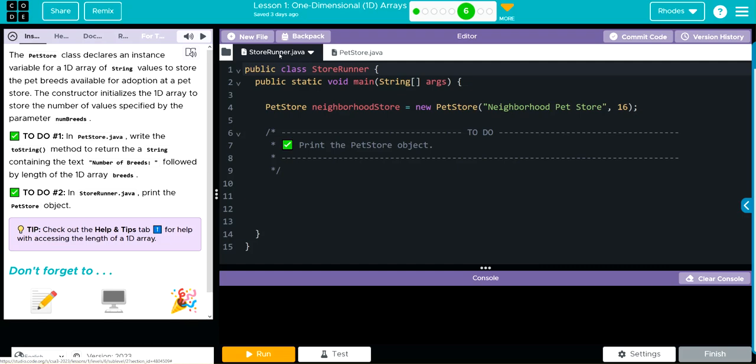Then we're going to come back to our store runner and print our pet store object. In our store runner, we're instantiating an object neighborhood store, passing along two parameters: neighborhood pet store and 16.